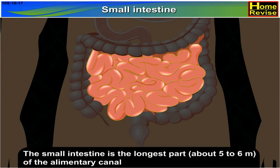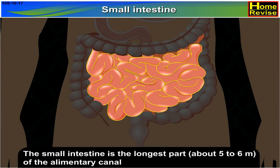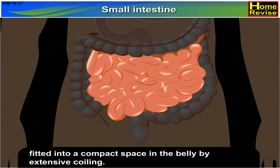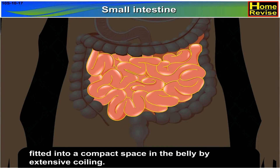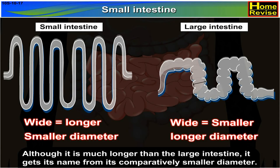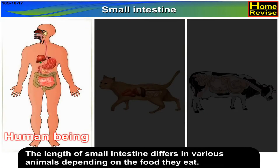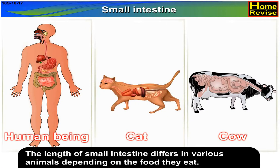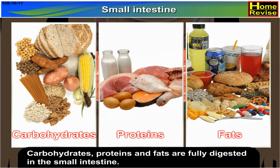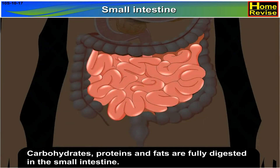The small intestine is the longest part, about 5 to 6 meters, of the alimentary canal, fitted into a compact space in the belly by extensive coiling. Although it is much longer than the large intestine, it gets its name from its comparatively smaller diameter. Carbohydrates, proteins, and fats are fully digested in the small intestine.